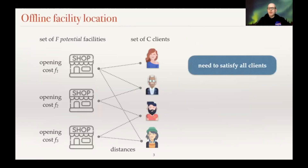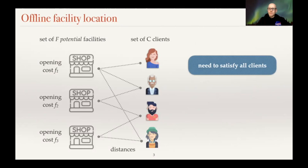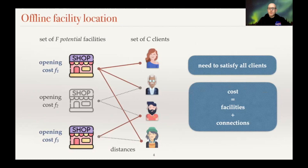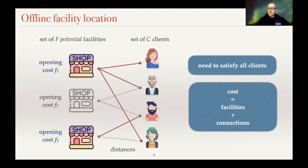We have a set of potential facilities — places for building facilities — and a set of clients. Our goal is to satisfy all these clients by connecting each client to some open facility. To this end, we need to open some set of facilities. One possible solution would be to open the first and the third facility, pay for the opening cost, and also pay the distances between clients and the chosen facilities. The total cost is the cost of all open facilities plus the cost of connections.